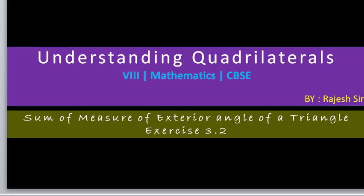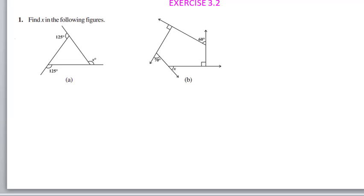Hello everyone, so today we are going to understand quadrilateral, second exercise, where the problems are based on sum of measure of exterior angles of a triangle. In the last lecture, we have understood that the exterior angles sum to 360 degrees. Based on that, we are going to solve problems.